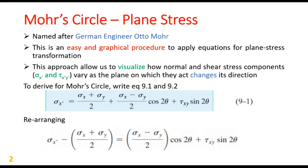Mohr's circle for plane stress is named after German engineer Otto Mohr. This procedure is very easy compared to the previous derivation of normal and shear stress transformations. This is an easy and graphical procedure to apply equations for plane stress transformation. This approach allows us to realize how normal and shear components sigma x prime and tau x prime y prime vary as the plane on which they act changes its direction. If theta is changed, there is no need to draw the circle again and again — we will just draw theta again and get the result.